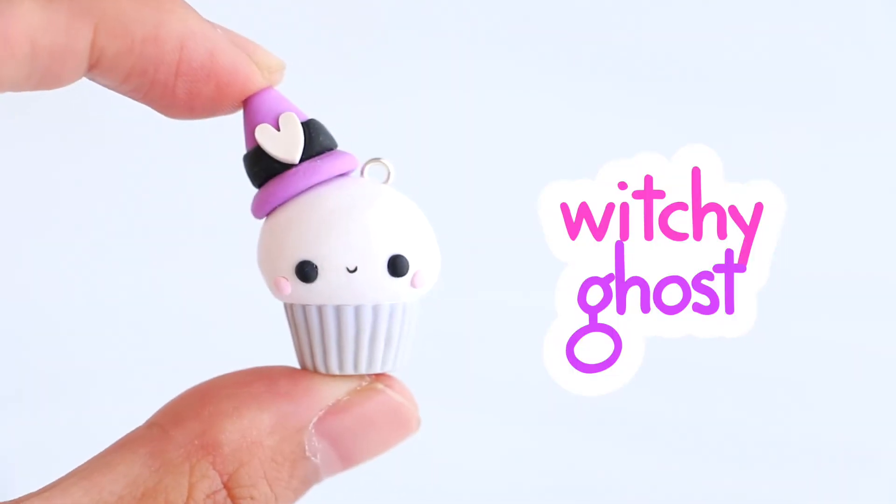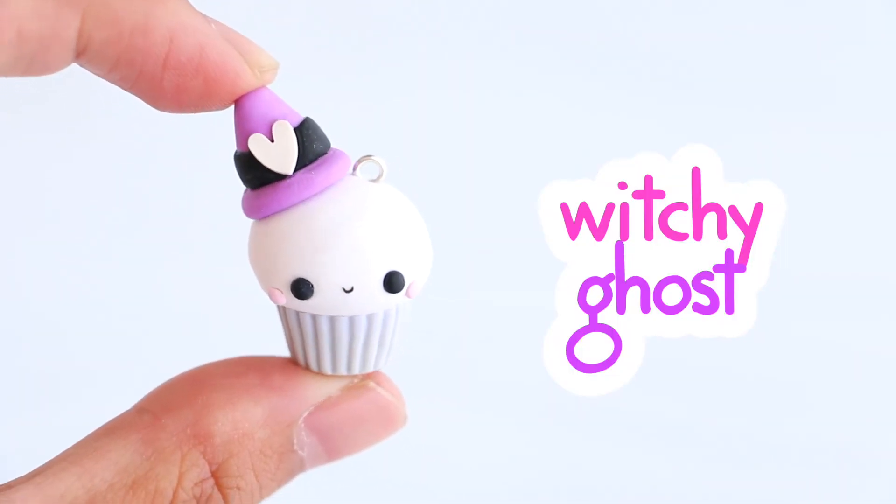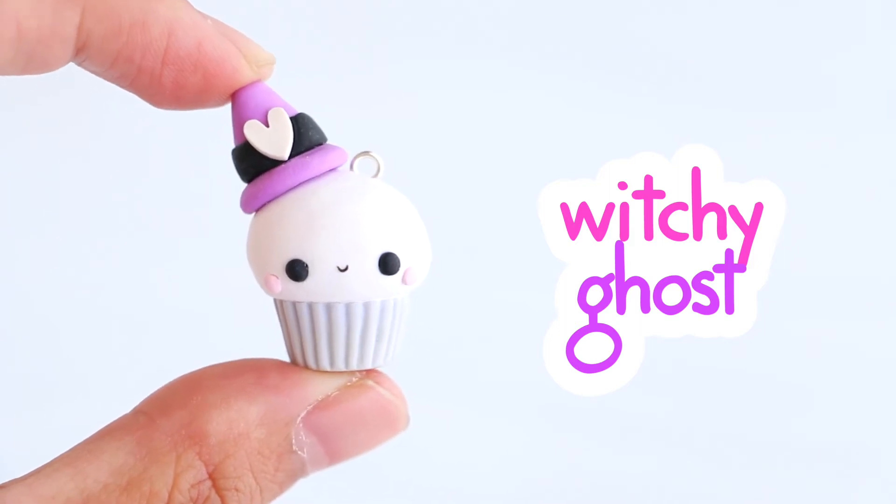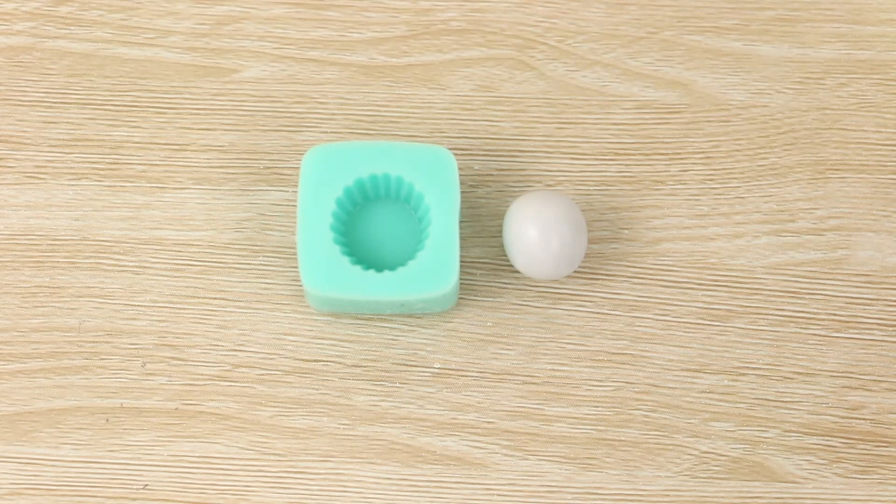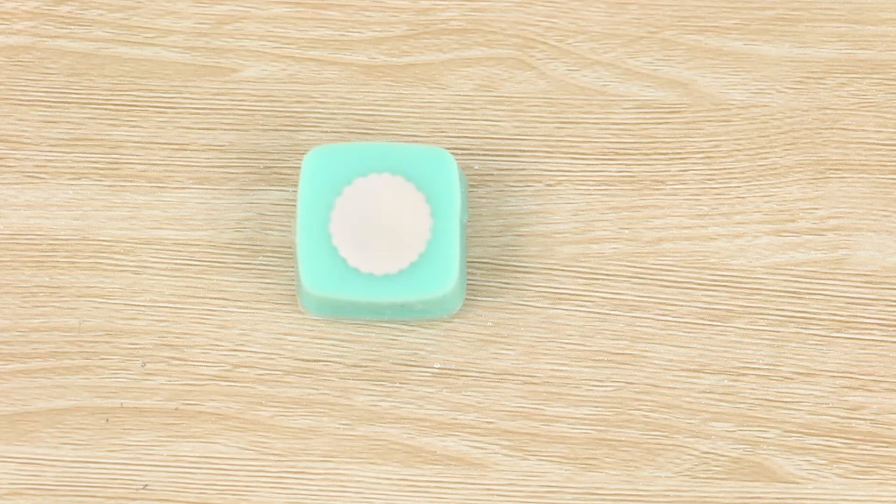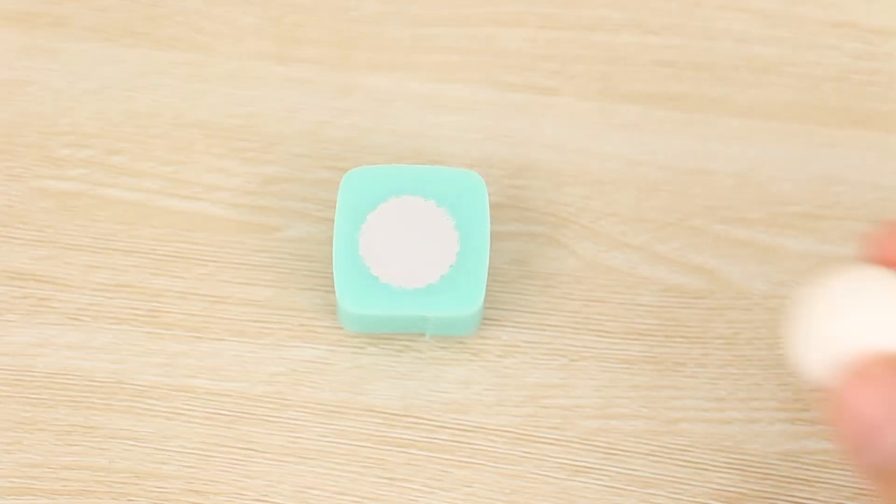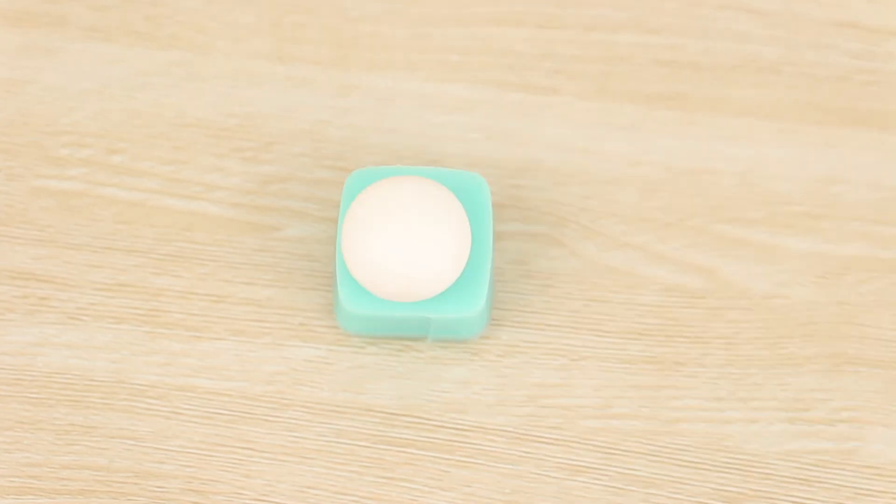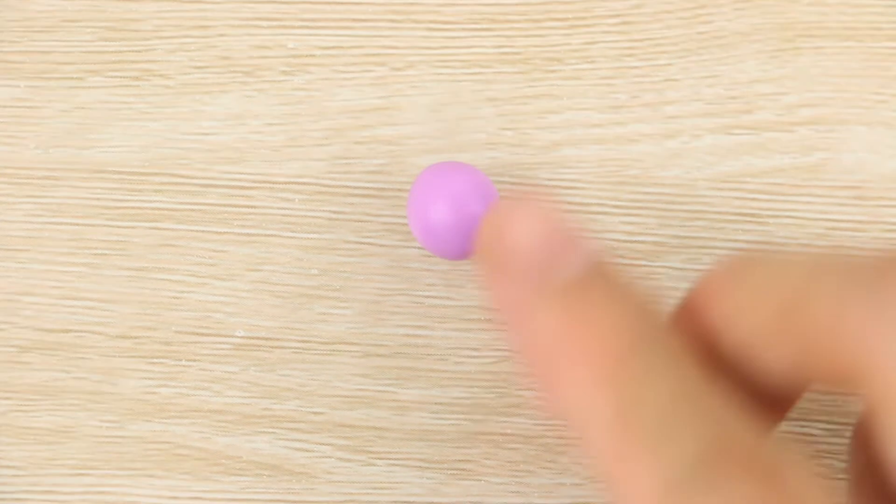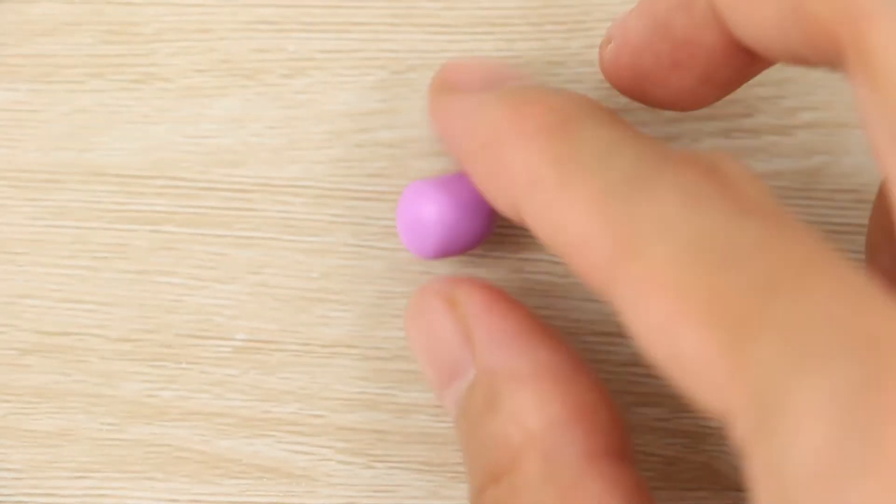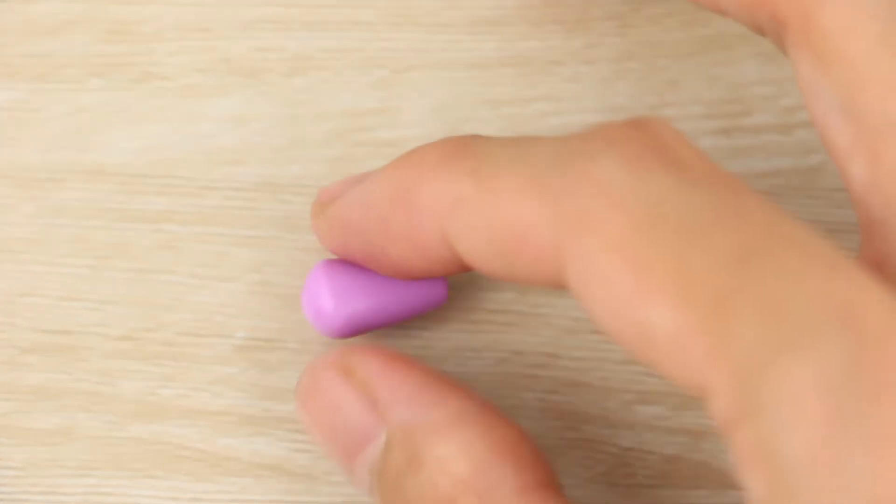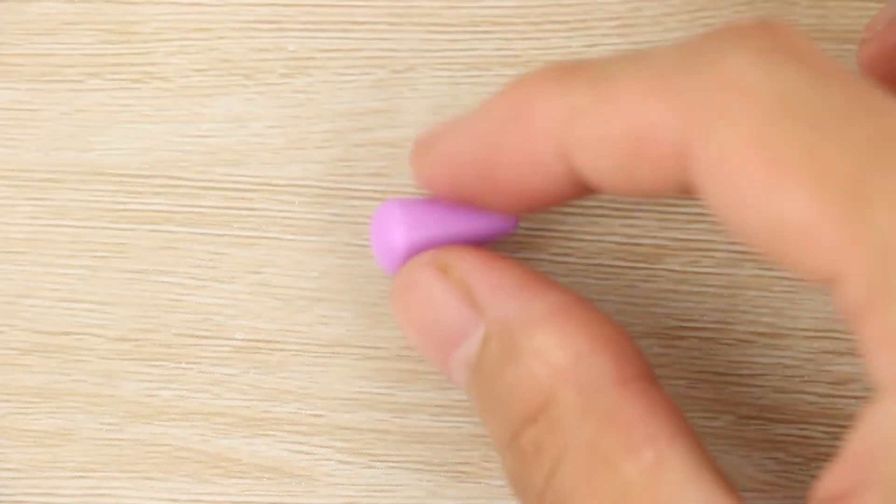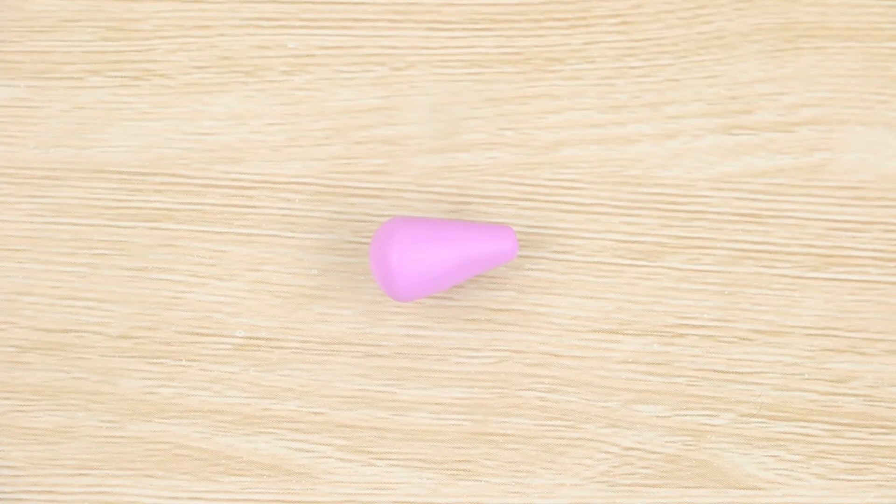Next up is a ghost cupcake with a witch's hat. For the base I'm using some light grey clay and for the head I'm using white. To make the hat I'm rolling one side of a large purple ball into a teardrop shape and then cutting a little bit of the thick end to turn it into a cone.